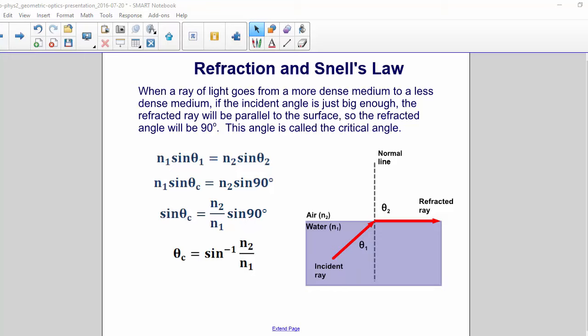You can find the critical angle by starting with Snell's Law, n1 sine theta1 equals n2 sine theta2, and we're going to make theta2 equal to 90 degrees, and of course the sine of 90 is equal to 1. So therefore, the critical angle is equal to the inverse sine of n2 over n1.